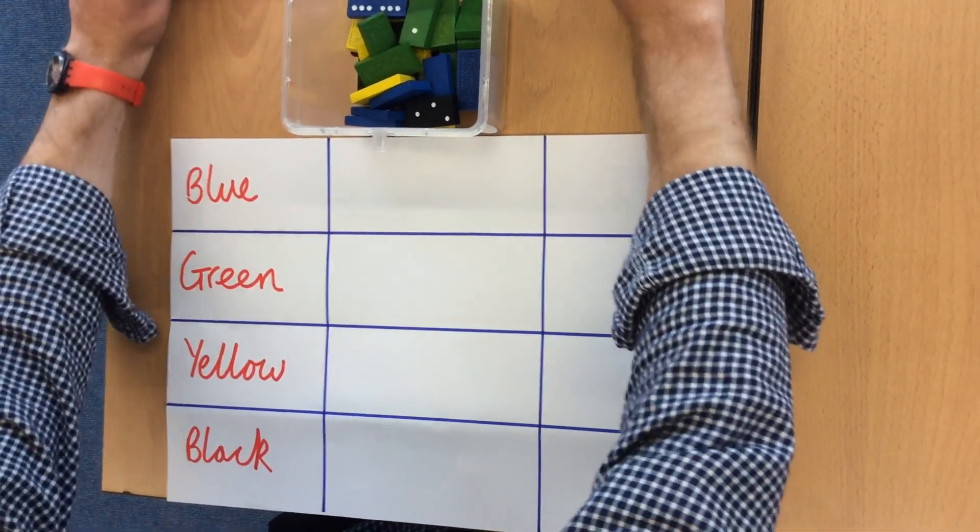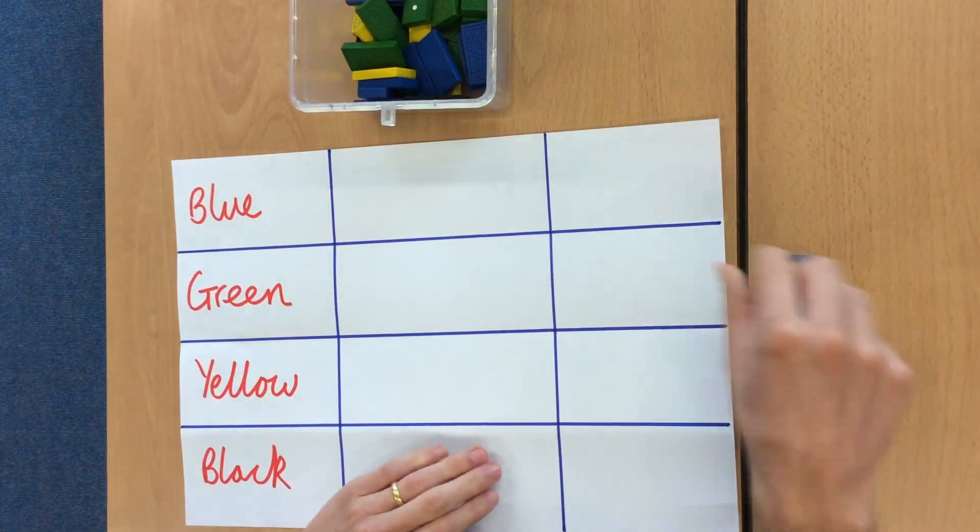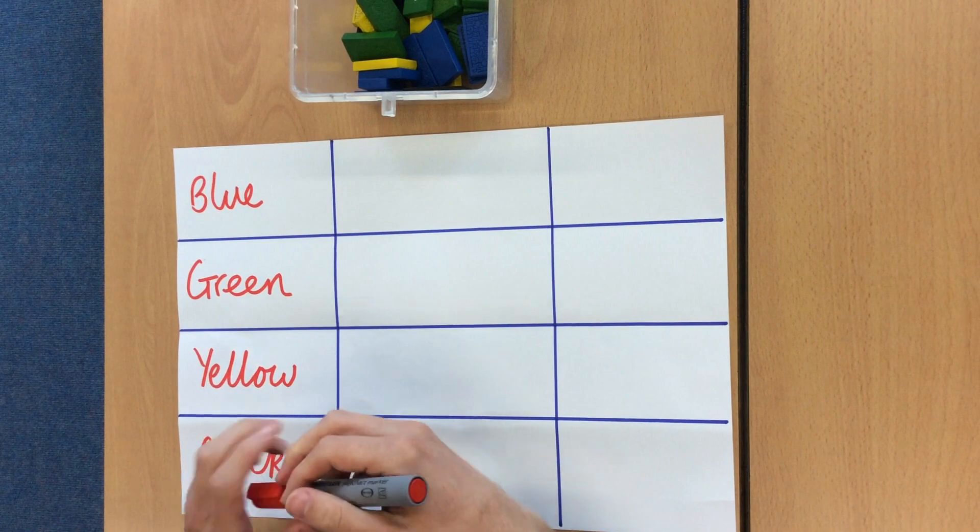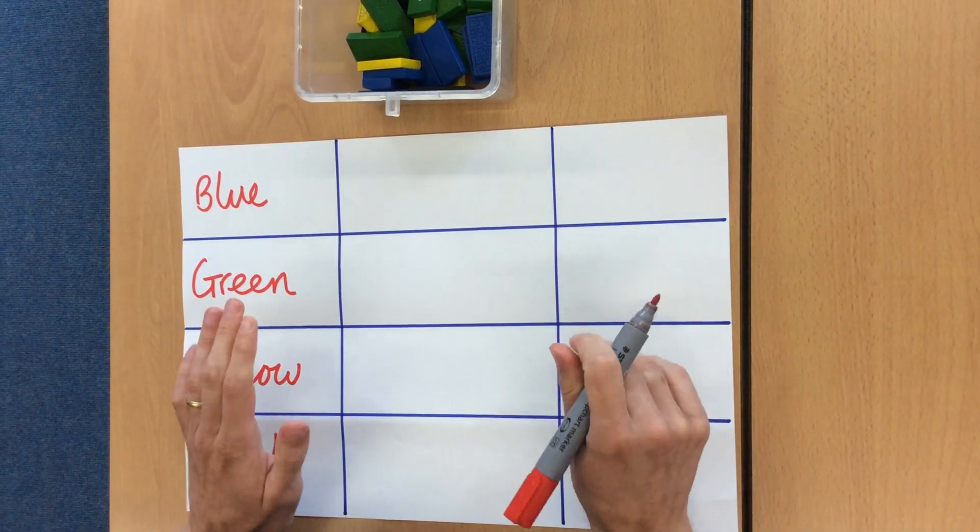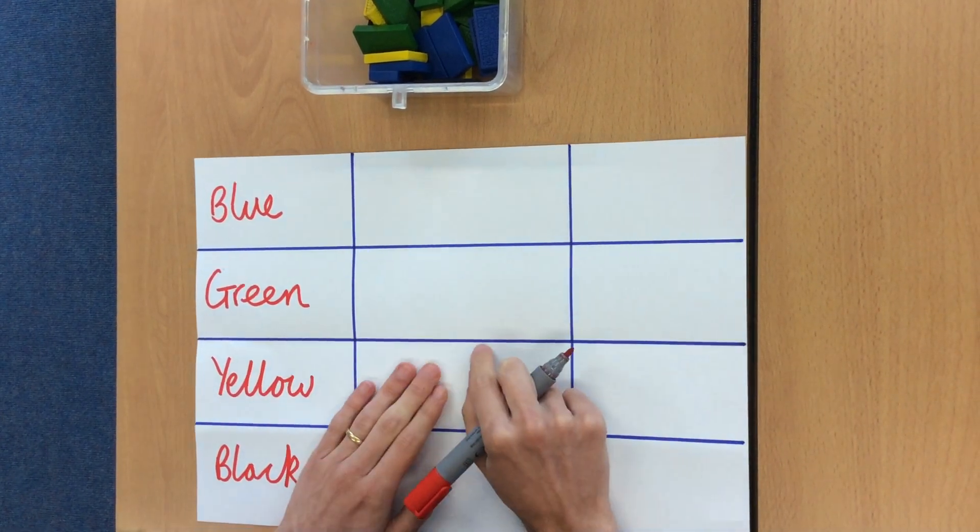I am going to have my dominoes ready in front of me, I am going to make a little bit of room. So all I am going to do, I am going to take out one at a time, place it with the correct colour, and then I am going to start my tally, so remember with a tally, it is little strokes. We are going to do the numbers at the end.